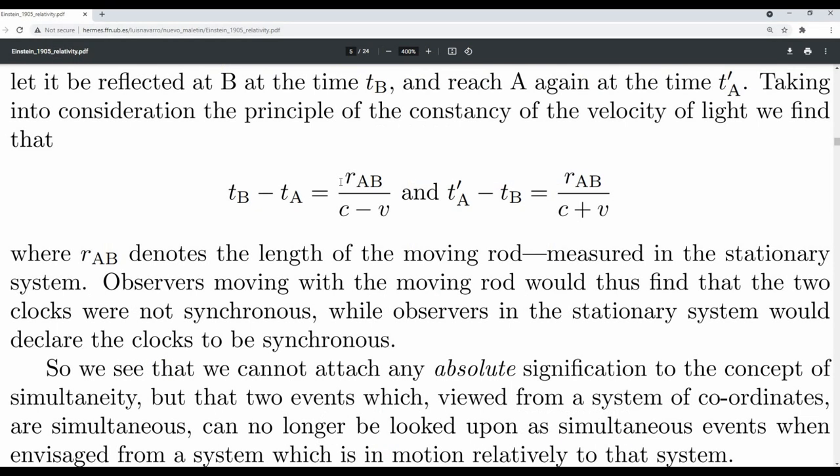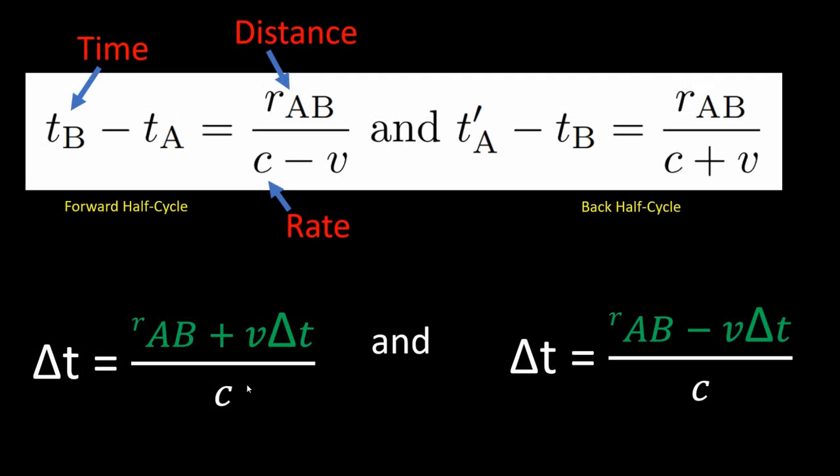So the result is, if you want the length of the moving rod to stay consistent, then you must change the speed of light. If you want the speed of light constant, then there must be a distance change.